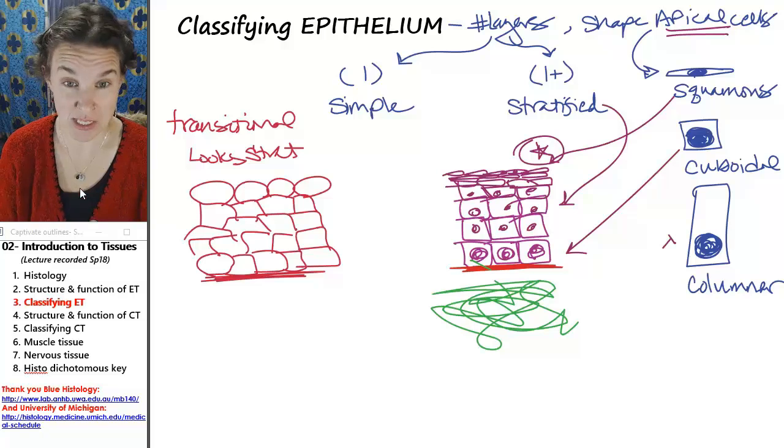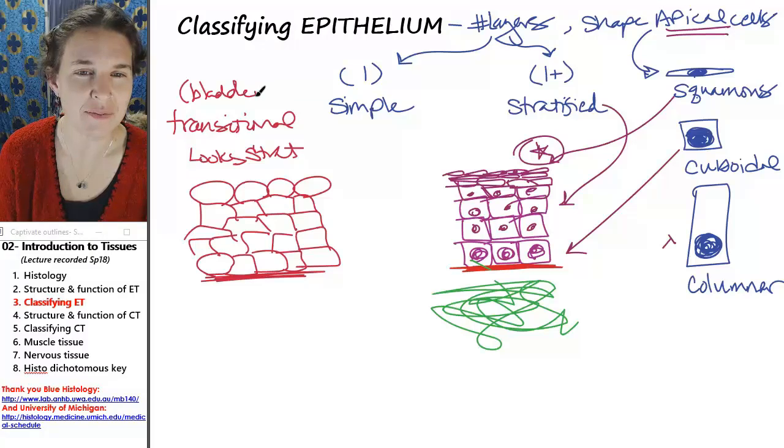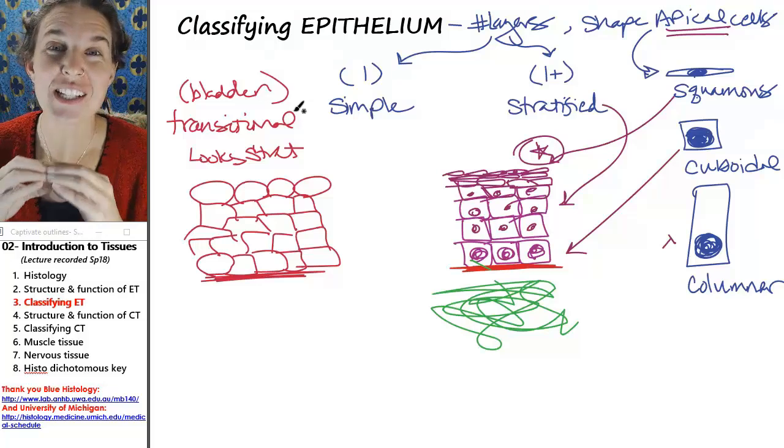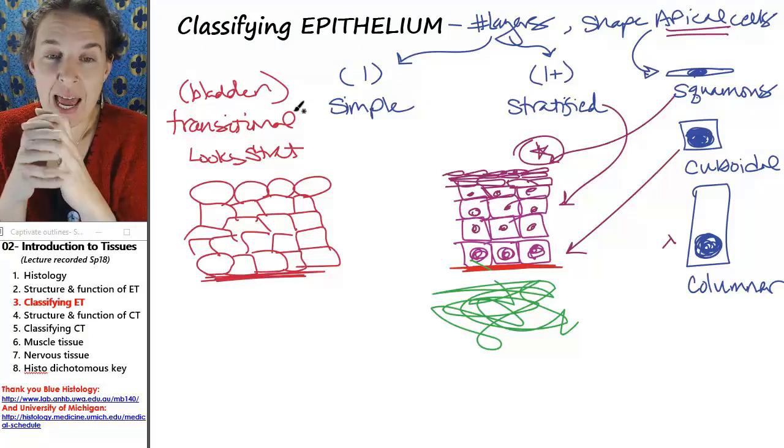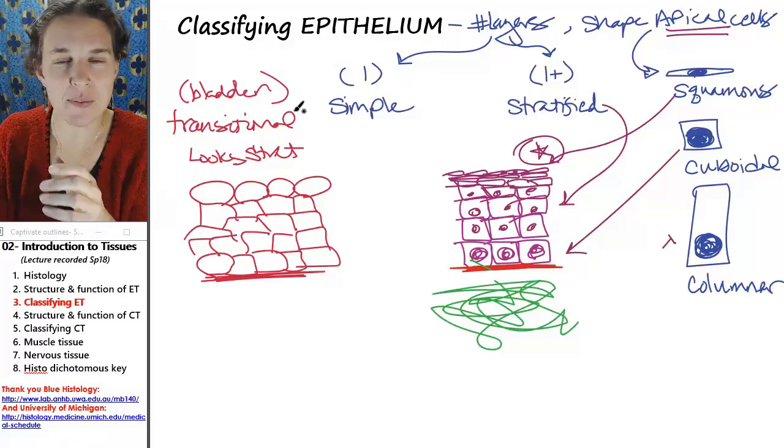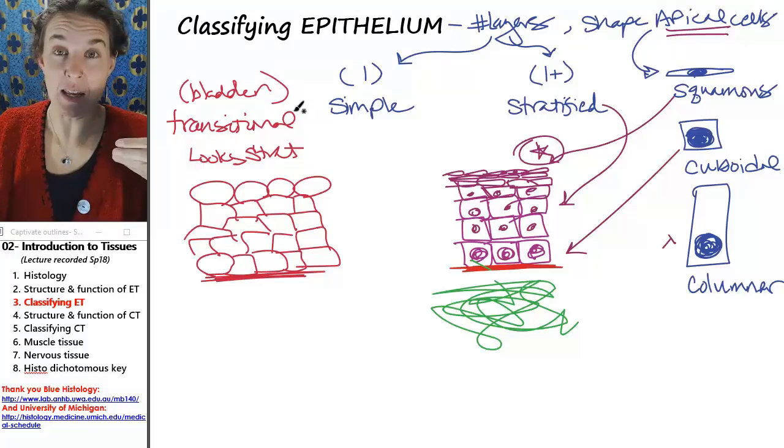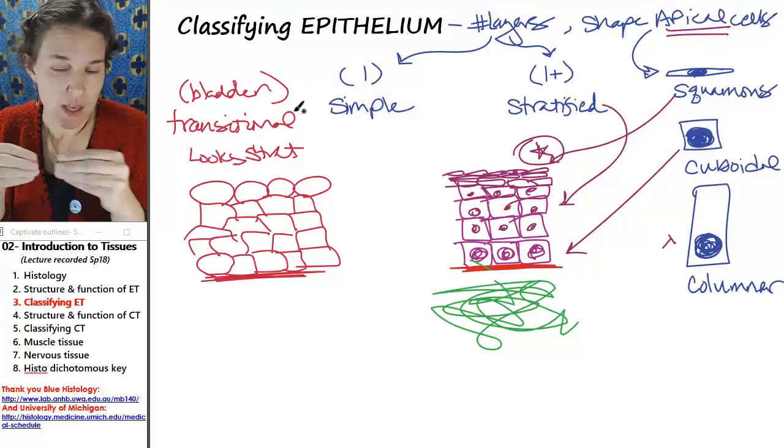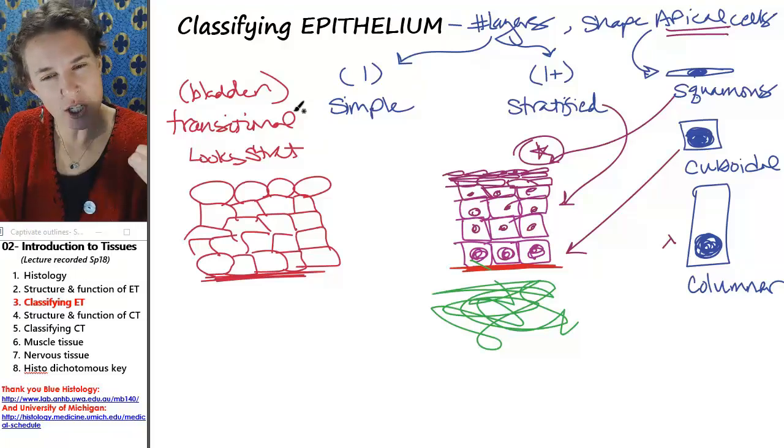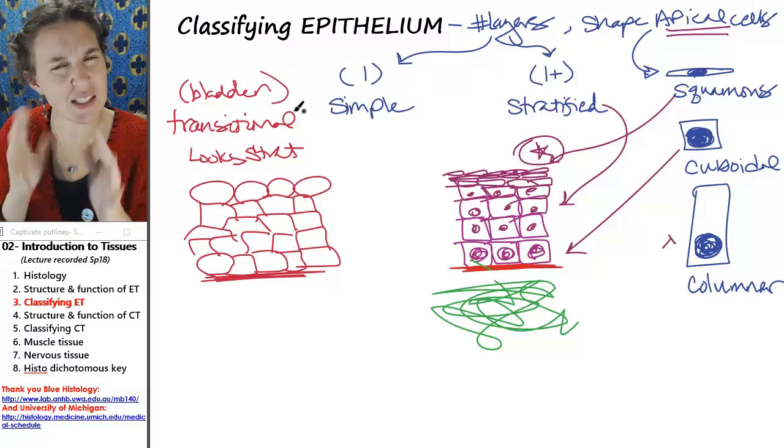Transitional epithelium is found in the bladder. I told you it looks stratified. The fact is that transitional epithelium, if it's relaxed, it looks stratified and it has those bubbly luminal cells in the bladder. If it's not relaxed and it's filled instead with fun things like urine, it actually stretches out. This is a stretchy tissue and it stretches out and it actually looks simple. So it's a bizarre tissue.